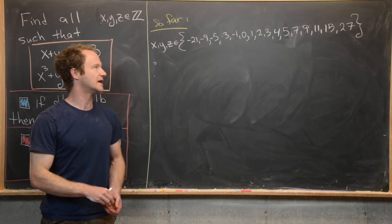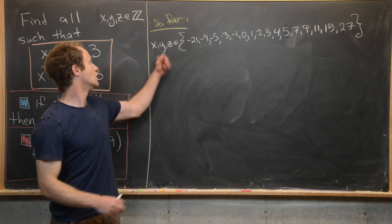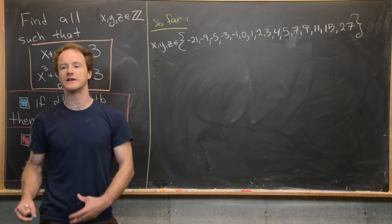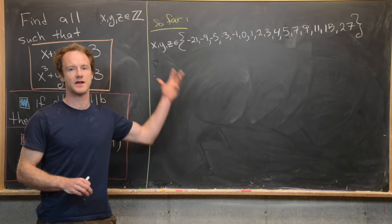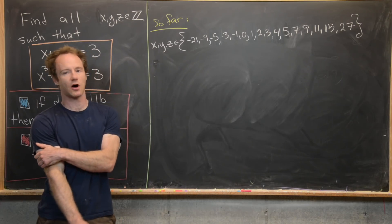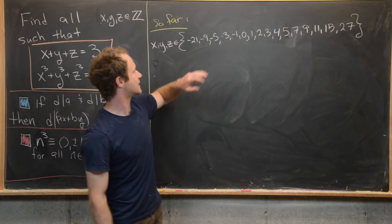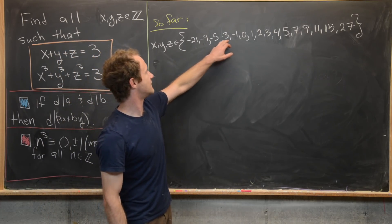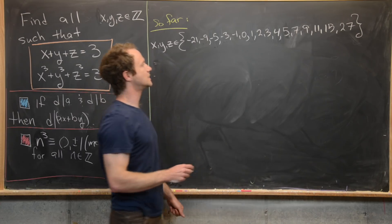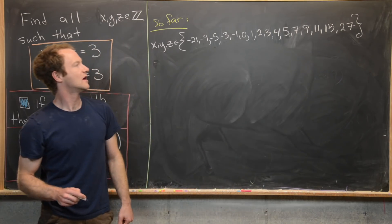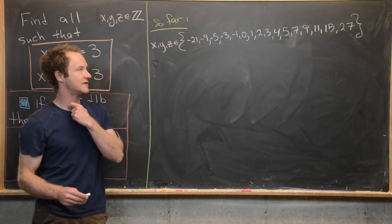The possible values of x, y, and z all come from the set: negative 21, negative 9, negative 5, negative 3, negative 1, zero, one, two, three, four, five, seven, nine, eleven, fifteen, and twenty-seven.